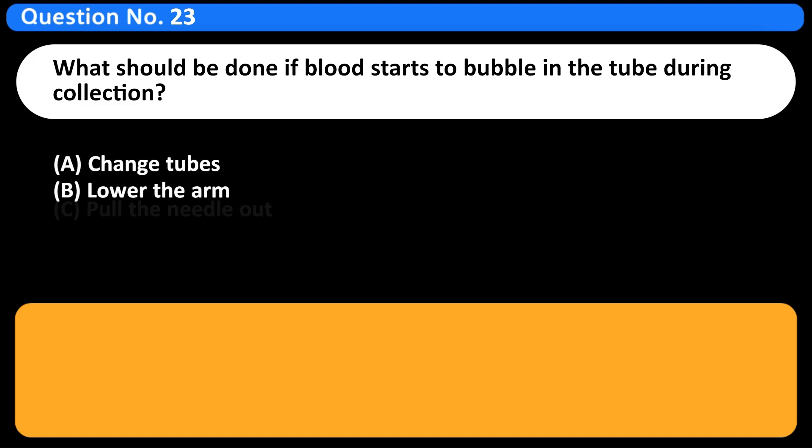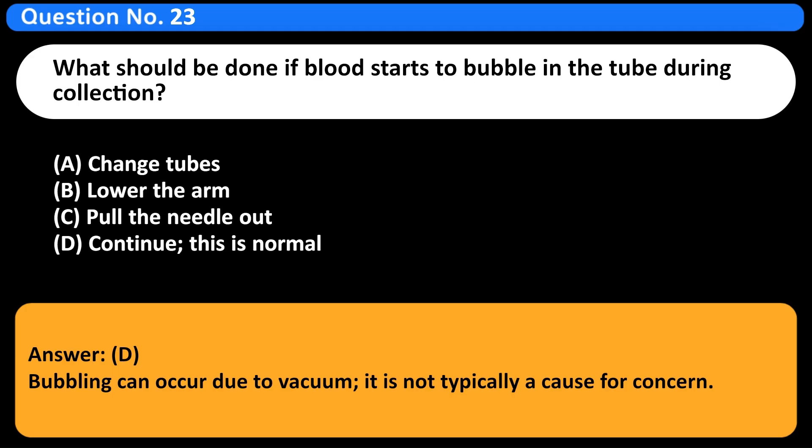What should be done if blood starts to bubble in the tube during collection? A. Change tubes. B. Lower the arm. C. Pull the needle out. D. Continue. This is normal. Answer D. Bubbling can occur due to vacuum. It is not typically a cause for concern.